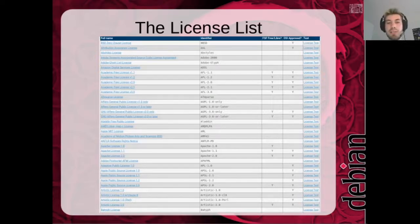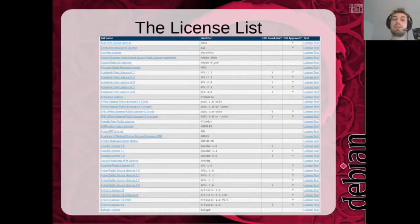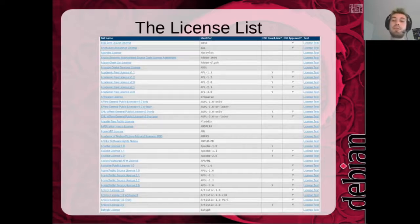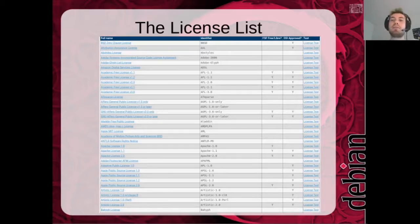That's the middle column here. For example, for the Academic Free License that would be AFL. You can also read the full license tags, the default license header, and there is also a column indicating whether the license is approved by the FSF or, more interesting in the case of Debian, by the Open Source Initiative.